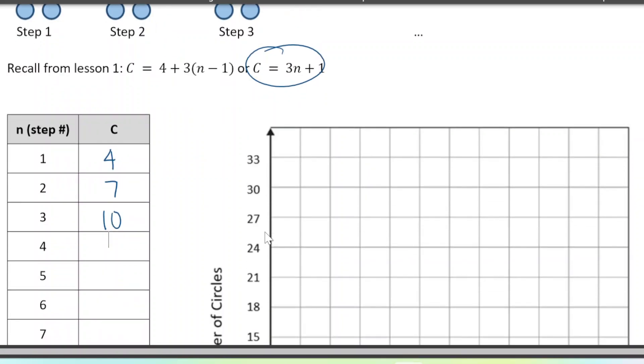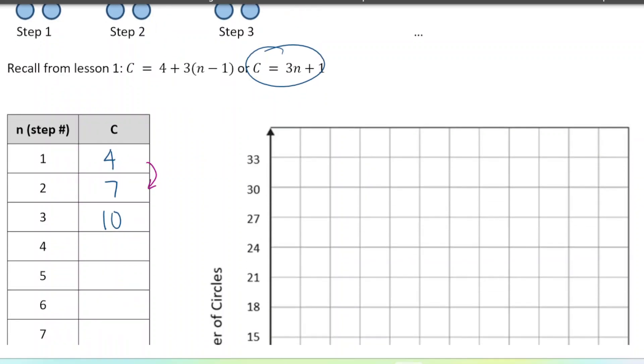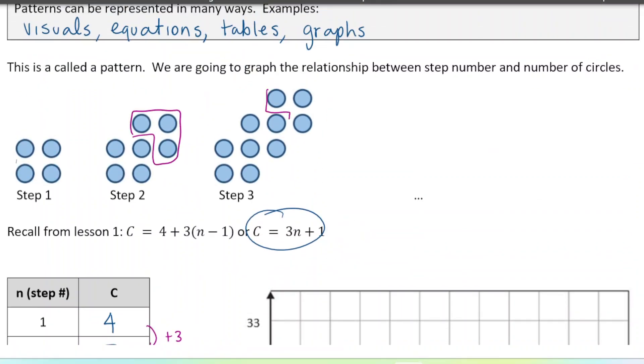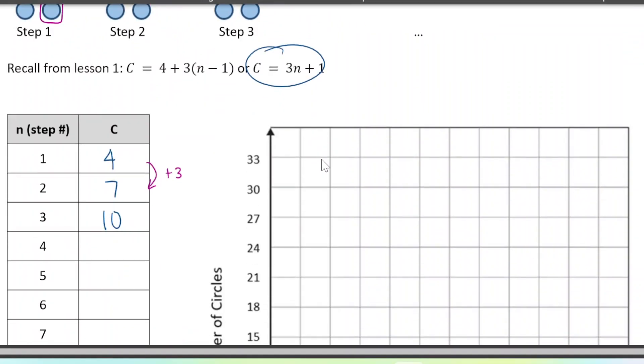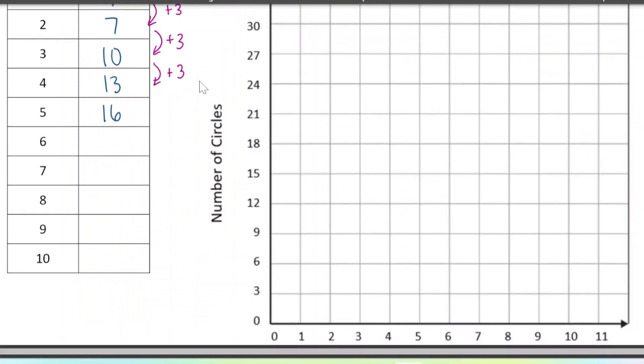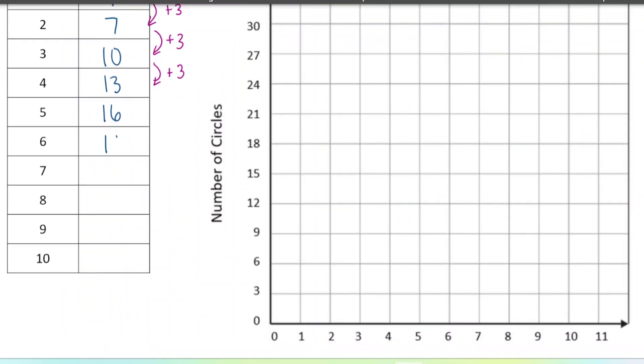And I can see a little pattern emerging here. Every single time I'm going to increase by three. And that's because there's always three extra circles being added on in every single step. So every time I increase by three. So we're going to have 13, and then 16, 19, 22, 25, 28, and 31.